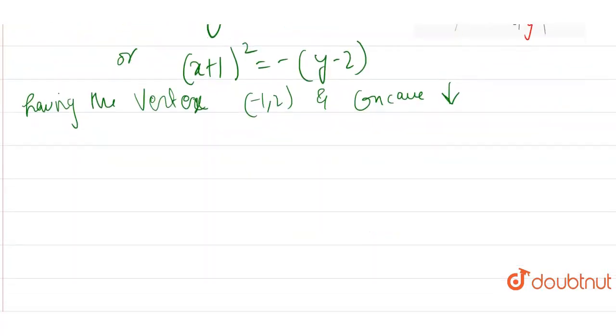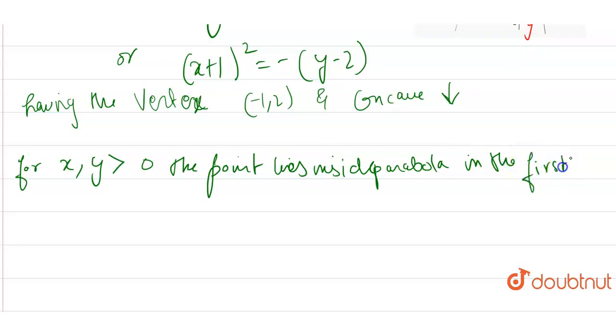So let's find the shaded area region which we have to find. For x, y greater than 0, the point lies inside parabola in the first quadrant. We have already seen it in the equation as shown in the figure. So let's find the required area.